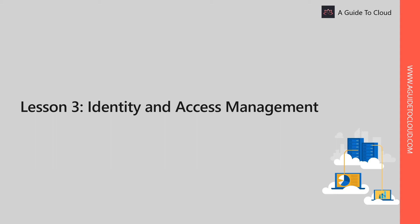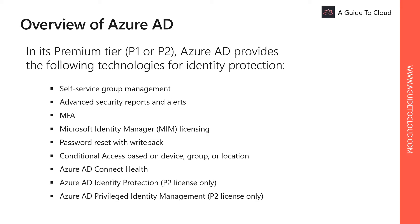Identity is the primary supporting pillar in any security system. You must be able to identify users and devices before you can determine the level of access or privilege that they have.